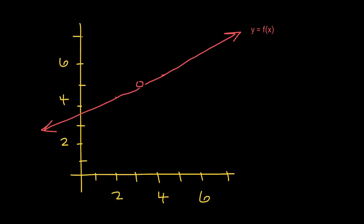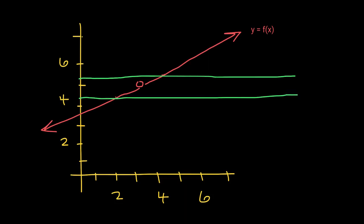I would like all of my function values to be within a half unit from five — within a half unit from the limit. So this is four and a half and this is five and a half. All of these function values in this region are within one half unit from 5. I would like us to find a value delta such that as long as the x values are less than delta, my function values are within one half unit from 5.